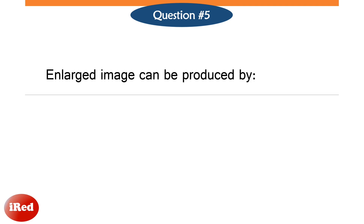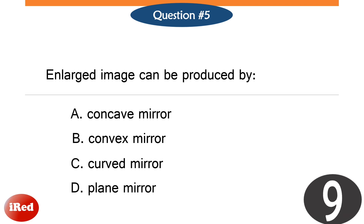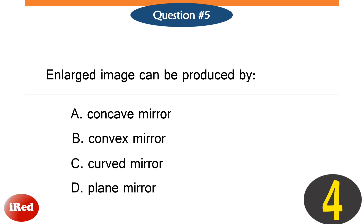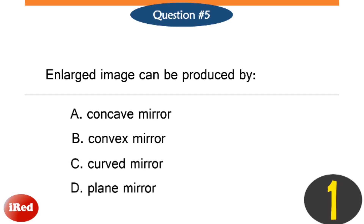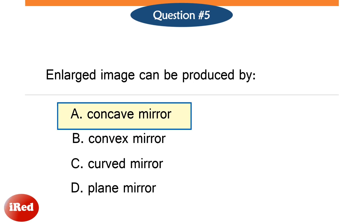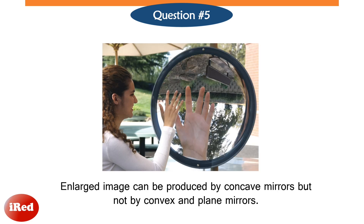Number five: a large image can be produced by — the answer is concave mirrors, but not by convex and plane mirrors.